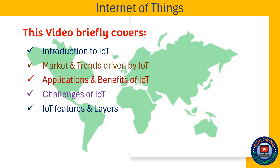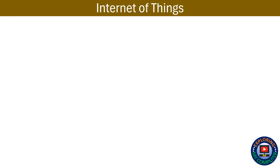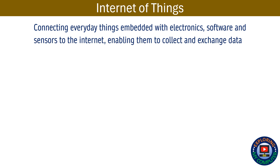IoT, or Internet of Things, is about connecting everyday things embedded with electronics, software, and sensors to the Internet, enabling them to collect and exchange data.